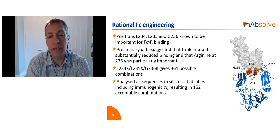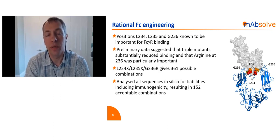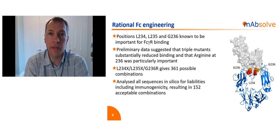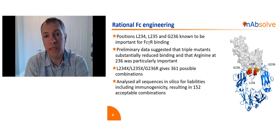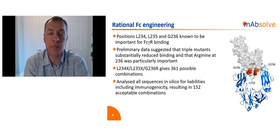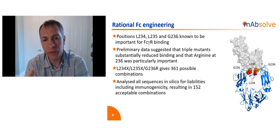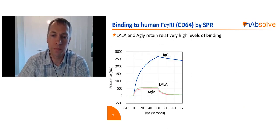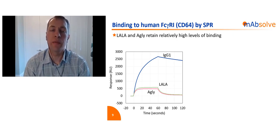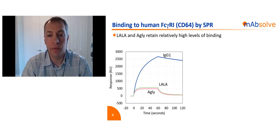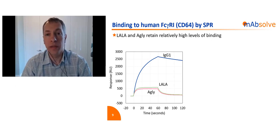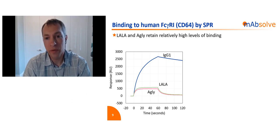We generated some initial proof-of-concept molecules, and it quickly became apparent that you had to incorporate an arginine at position 236 if you wanted really low levels of FC receptor binding. That meant ideally creating a library of all possible mutations at 234 and 235 in combination with an arginine at 236, leading to 361 theoretical combinations. We didn't have the R&D budget to make all of these, so instead we went through an in silico triage process, removing variants we didn't feel were desirable — no free cysteines, no deamidation sites, no glycosylation sites, no enhanced immunogenicity, etc. Through this process we got to 152 acceptable combinations.